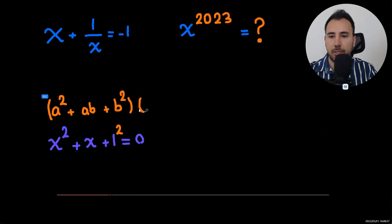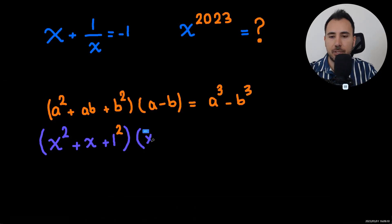And we know this formula, multiplied by a minus b is a cubed minus b cubed. So let's do the same thing. Multiplying this by x minus 1. So the equation will turn into x cubed equals 1.